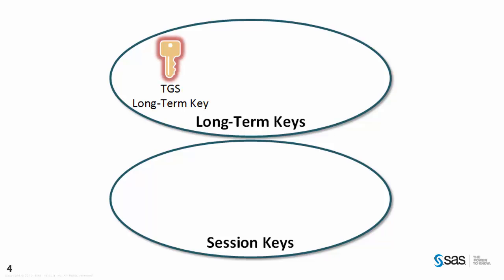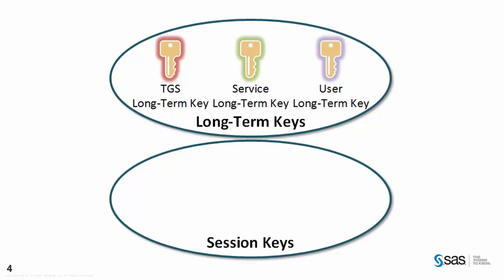Within the long-term keys, we have the long-term key for the ticket granting service, associated with the password for the account running the ticket granting service on the KDC. The service long-term key is associated with the service the end user is going to connect to — specifically the password of the account or object representing the service in the KDC's database. Finally, we have the key associated with the end user, derived from the end user's password in Kerberos.